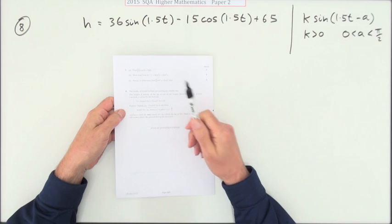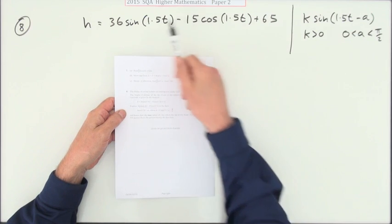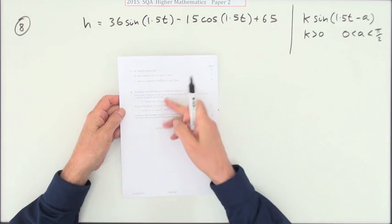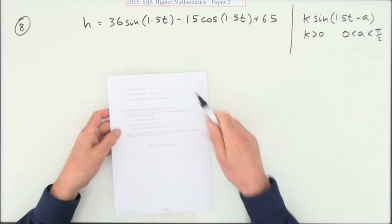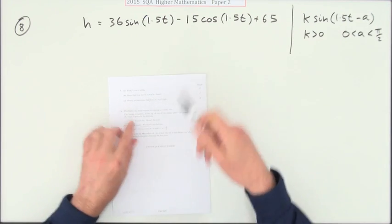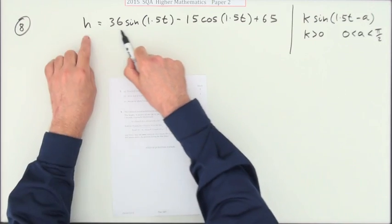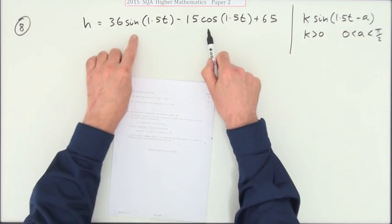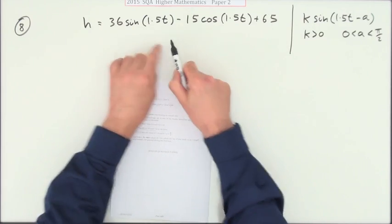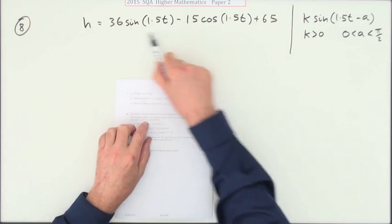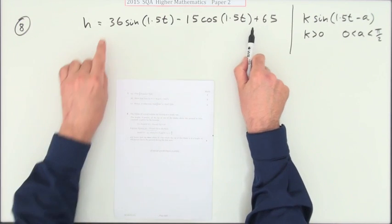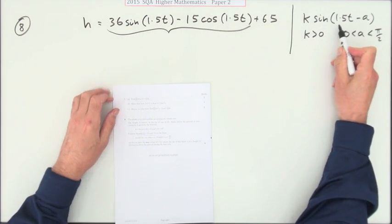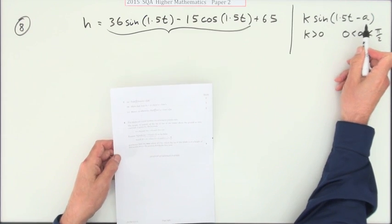So question eight then. The last question in paper two of the final year of the old higher, the 2015 higher, and it's a wave function question. Here we've got this wind turbine. So the height's given by this expression here, and obviously you're going to combine them into a single wave. It says combine just this portion of it, not the 65, combine this portion here into the form of k sine 1.5t minus a.